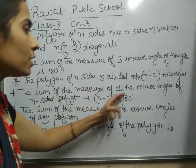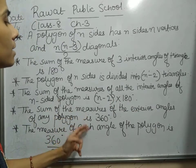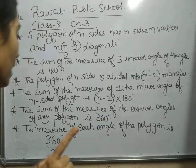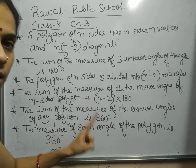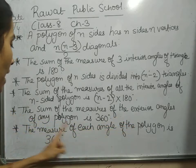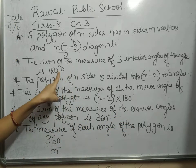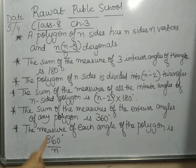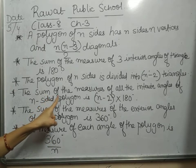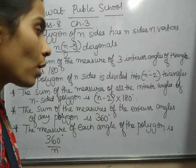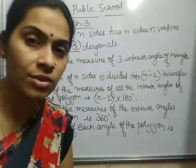The sum of the measures of all the interior angles of an n-sided polygon is (n−2)×180 degrees. The sum of the measures of the exterior angles of any polygon is 360 degrees. The measure of each exterior angle of a regular polygon is 360°/n. Now let's start Exercise 3.1.